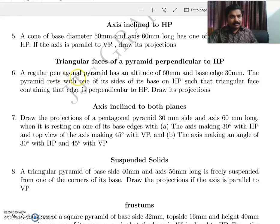A regular pentagonal pyramid has an altitude of 60 mm and base edge 30 mm. The pyramid rests with one of its sides of its base on HP such that the triangular face containing that edge is perpendicular to HP. Draw its projections.